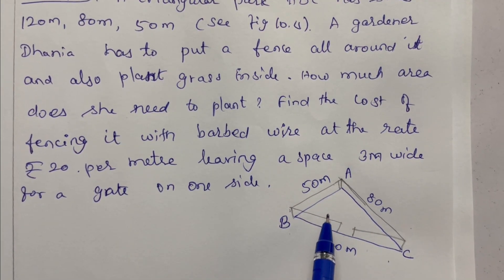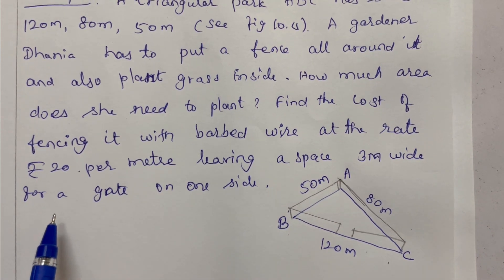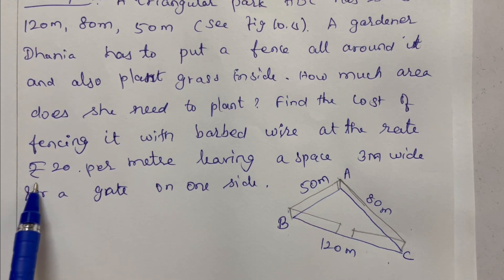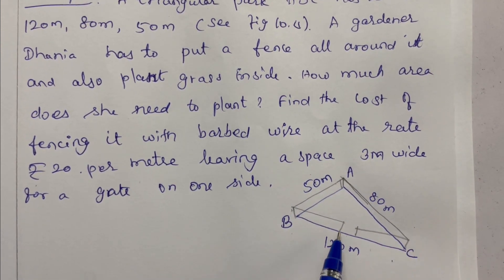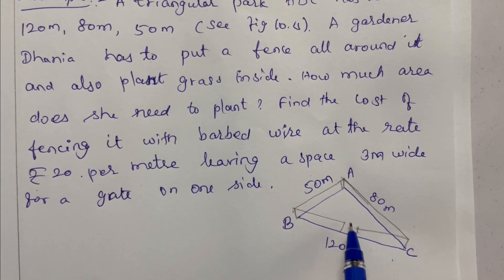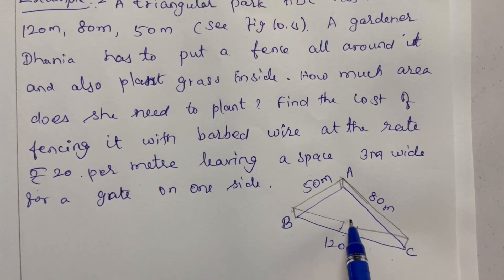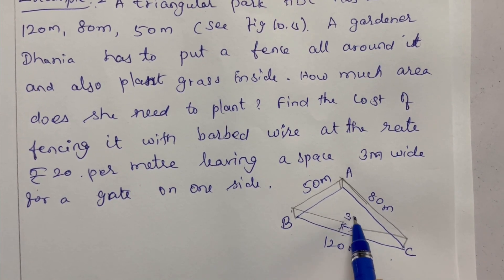How much area does she need to plant? Find the cost of fencing it with barbed wire at the rate Rs. 10 per meter, leaving a space 3 meter wide for a gate on one side. This is the gate, this distance is 3 meter wide.